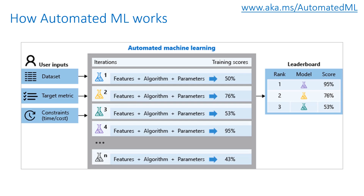Finally, you need to configure the compute target for model training, such as your local computer, Azure Machine Learning compute, remote VMs, or Azure Databricks. During training, the Azure Machine Learning service creates a number of in-parallel pipelines that try different algorithms and parameters, and will stop only once it hits the exit criteria that you define in the experiment.